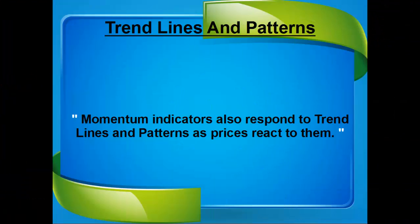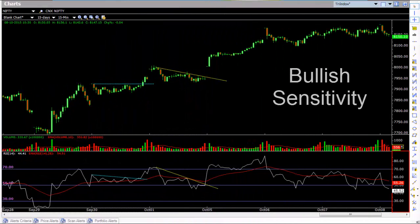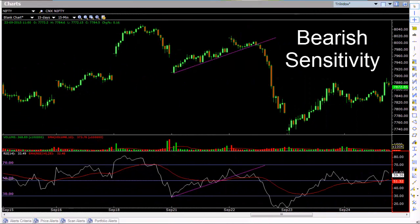Momentum indicators also respond to trend lines and patterns just as prices react to them. This means if you find a head and shoulders pattern on a momentum indicator, it will increase the chances of a price fall even if no head and shoulders pattern is actually formed on the price chart. Now, sensitivity in bull and bear markets. During a bull market, momentum might shift to overbought condition very quickly and stay there for a long time. In a bear market, it can remain in oversold condition for a long time. In a bull market, price is extremely sensitive to oversold conditions, meaning momentum can shift to oversold level without price undergoing any major change. The opposite happens in a bear market, where prices may touch overbought without any major recovery in price. You should always draw trend lines to take advantage of this sensitivity, because as soon as a trend line breaks, prices usually continue in the direction of the trend sensitivity.